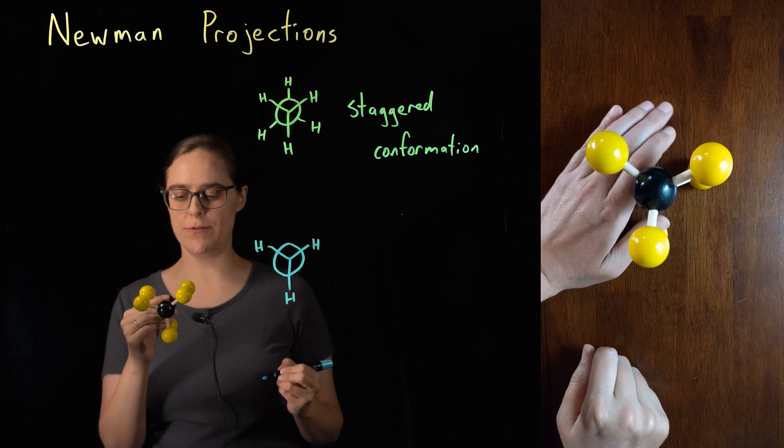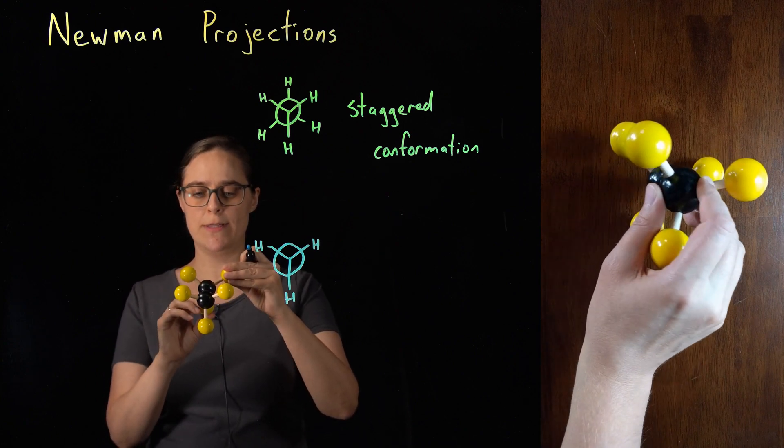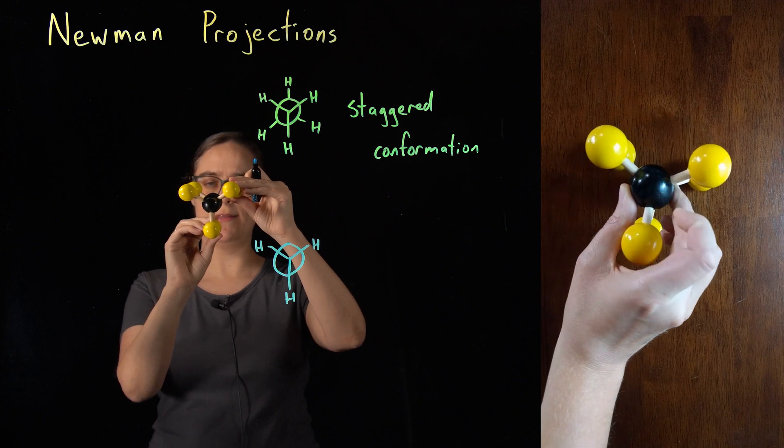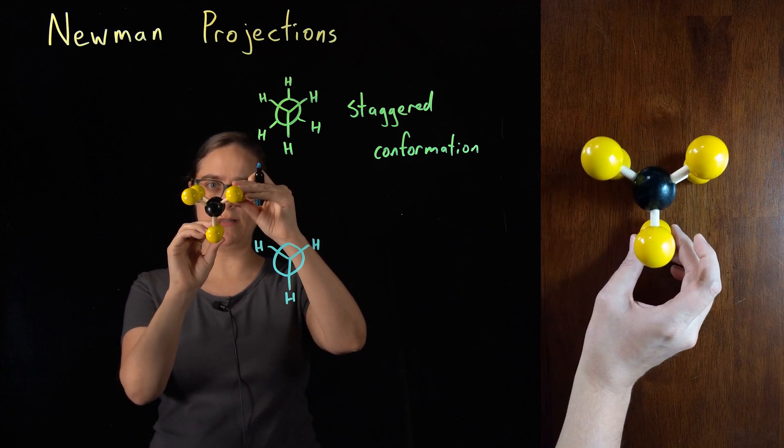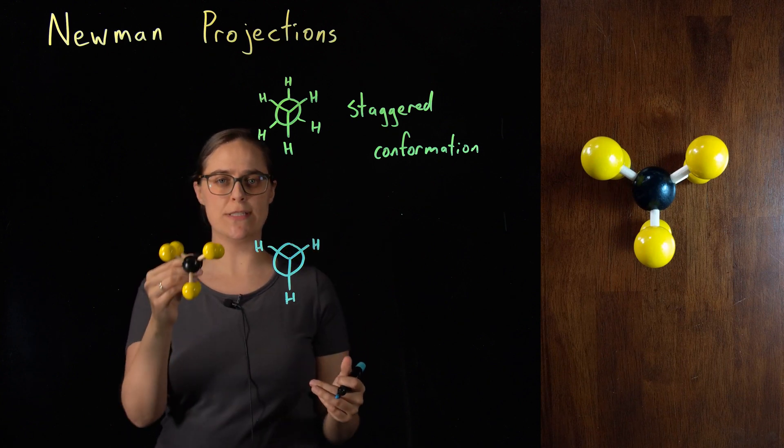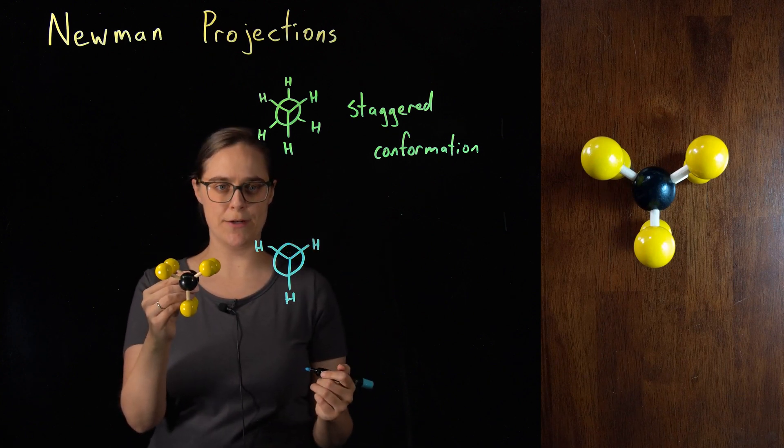Now, we need to draw the three hydrogens for this carbon in the back. But this is difficult. When I align these two carbons along my line of sight, hydrogens are eclipsing each other. It is difficult to see those hydrogens that are on the back carbon.